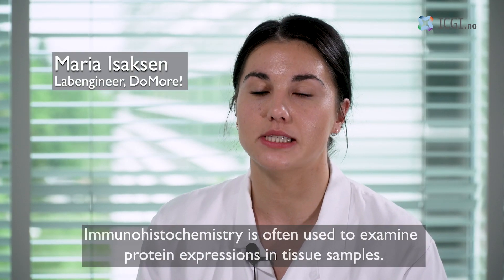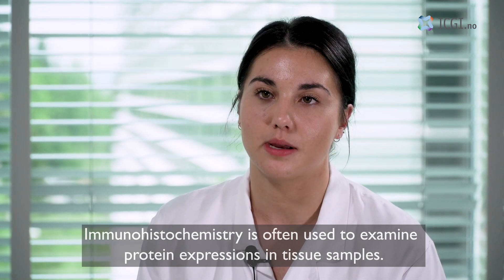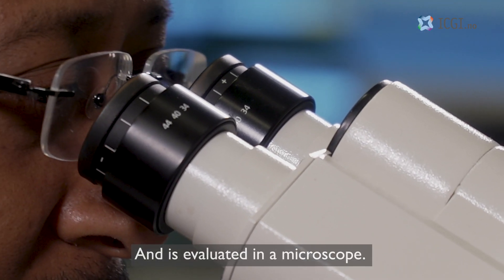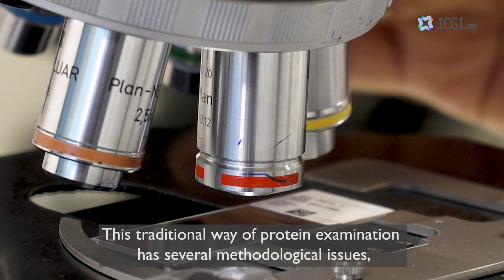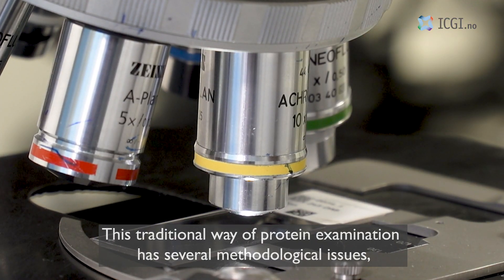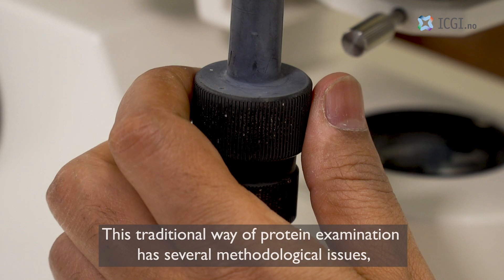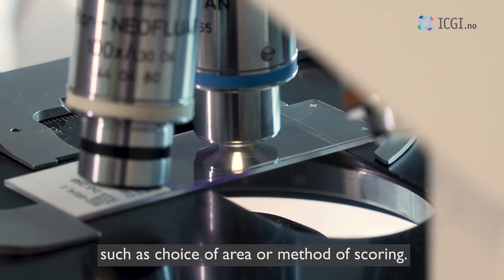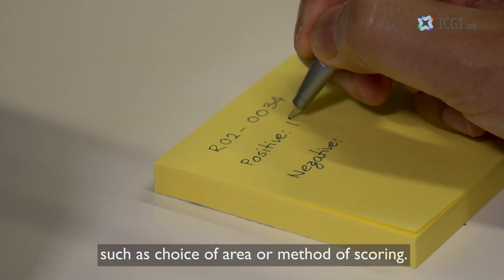Immunohistochemistry is often used to examine protein expression in tissue samples and is evaluated in a microscope. This traditional way of protein examination has several methodological issues such as choice of area or method of scoring.